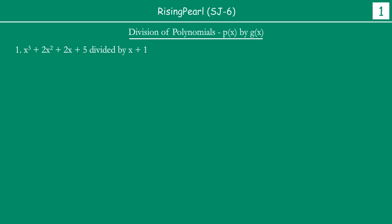As far as the type of questions go, friends, the questions are very straightforward. You are given two polynomials — one will be P(x) and the other one will be G(x) — and then you are asked: can you divide P(x) by G(x)? This is basically a very straightforward type of question where you will be asked to divide one by the other.